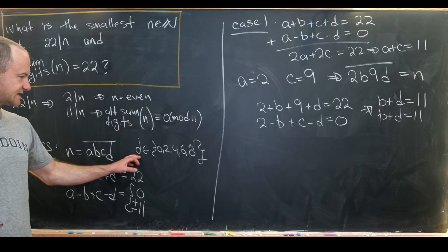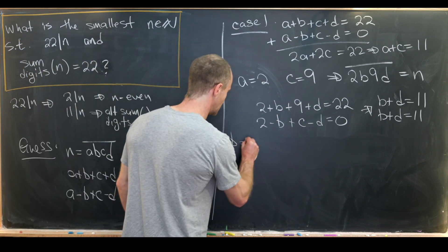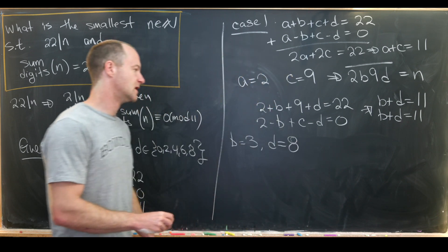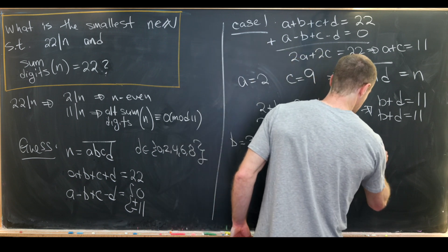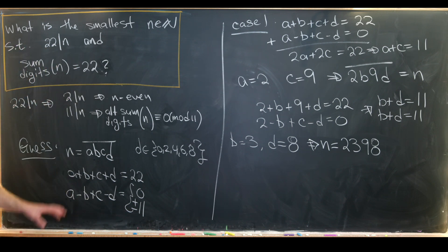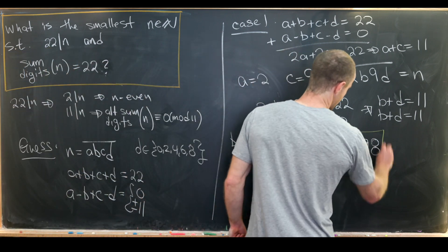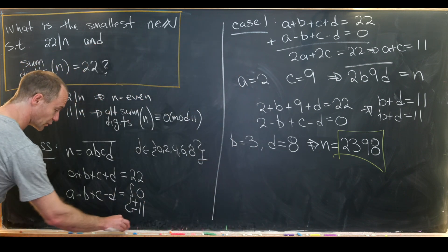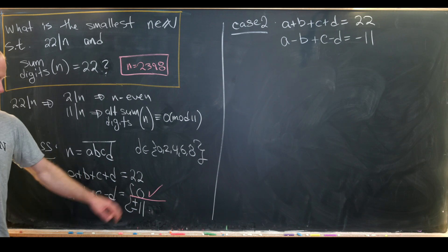We need b + d = 11, and d must be even. Making b as small as possible, we take d = 8 and b = 3. That gives us n = 2398. This number is even (ends in 8), is a multiple of 11 because its alternating sum equals 0, and has digit sum 22. So we have a candidate, but we need to check the other cases to confirm it's the smallest.